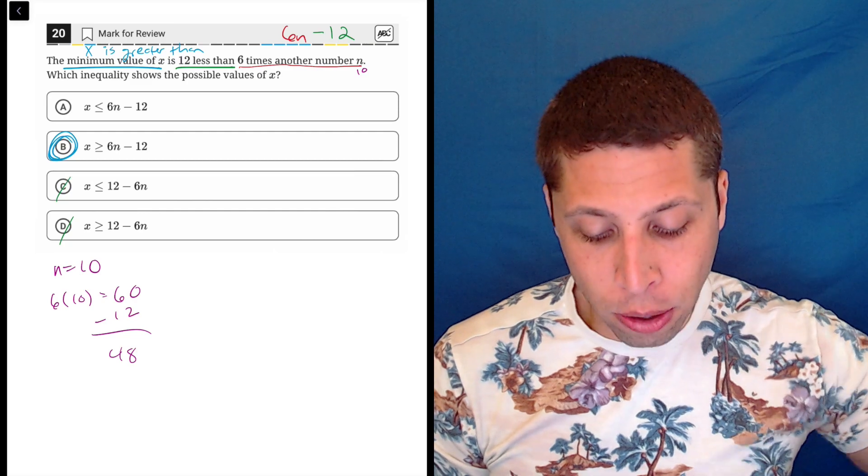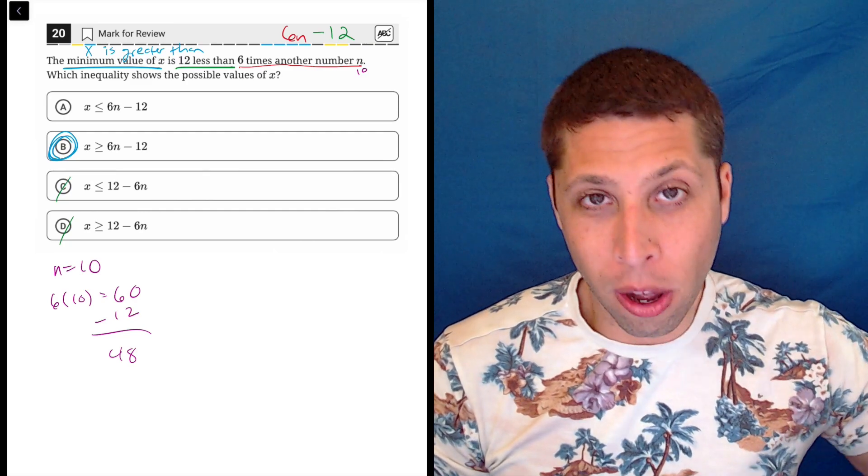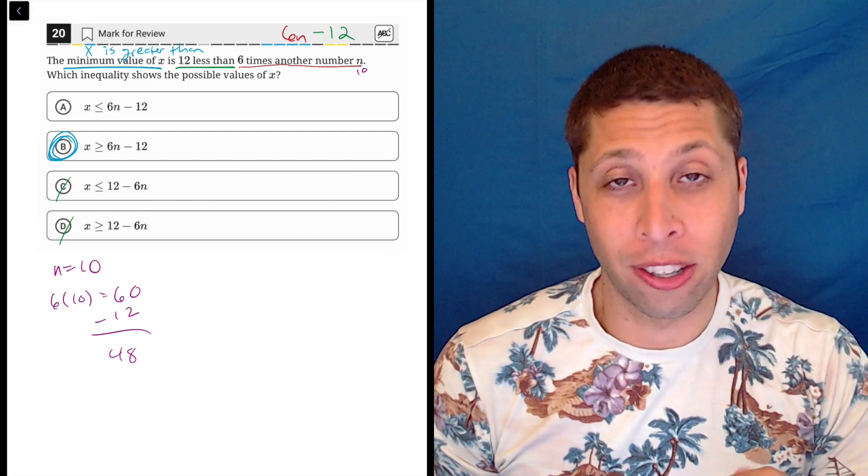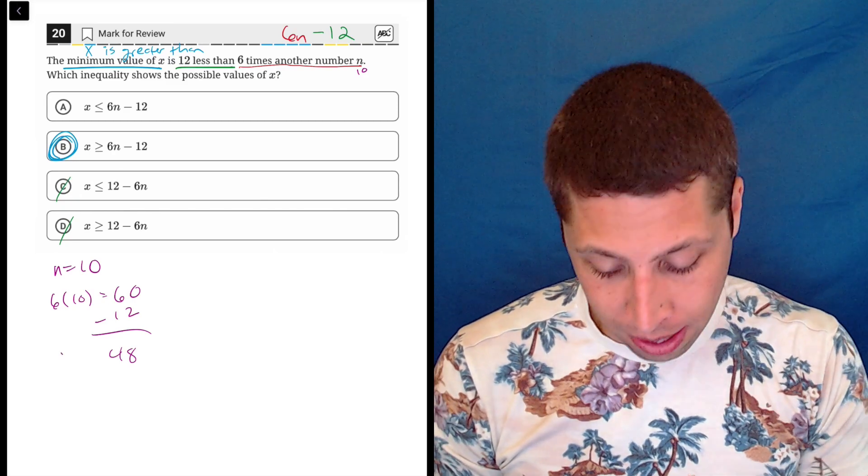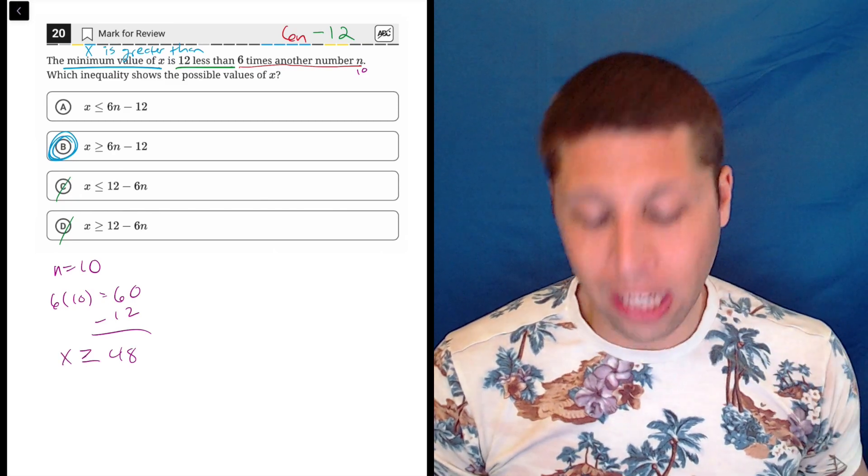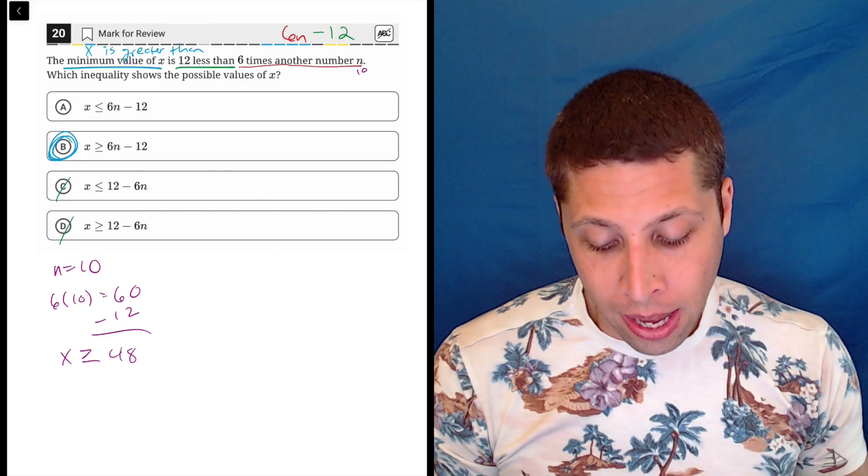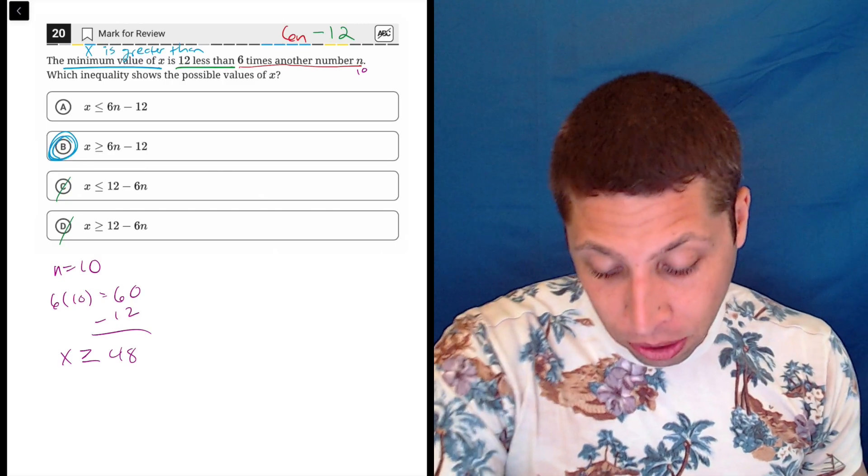So x, the minimum value of x is 48. So x is greater than or equal to 48. And now if we go to our choices, maybe this helps us. We can kind of see it.